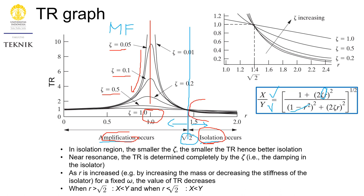The opposite trend occurs in the isolation region. Looking at the magnified version of this region, the lower the value of zeta, the better — the lower the value of zeta, the lower the transmissibility. In general, when designing vibration isolation using the TR graph, we want to bring the operation within the isolation region, so we want R to be larger than the square root of 2.